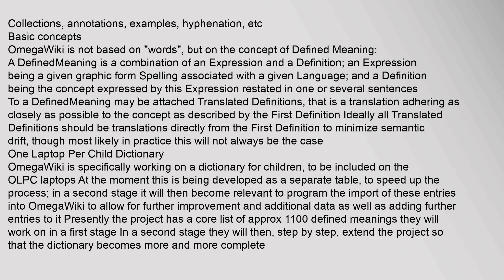One Laptop Per Child Dictionary: OmegaWiki is specifically working on a dictionary for children, to be included on the OLPC laptops. At the moment this is being developed as a separate table to speed up the process. In a second stage it will then become relevant to program the import of these entries into OmegaWiki to allow for further improvement in additional data as well as adding further entries. Presently the project has a core list of approximately 1,100 defined meanings they will work on in a first stage. In a second stage they will then, step by step, extend the project so that the dictionary becomes more and more complete.